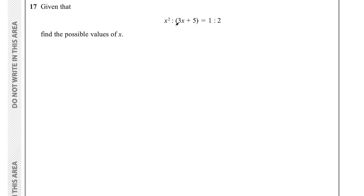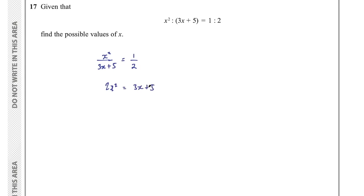Question 17 says given that x² : (3x + 5) = 1 : 2, find the possible values of x. Writing the ratio as a fraction: x² over (3x + 5) equals 1/2. Cross-multiplying to eliminate fractions gives 2x² equals 3x + 5. Rearranging to get everything on one side: 2x² minus 3x minus 5 equals 0. This is a quadratic equation to factorise and solve.